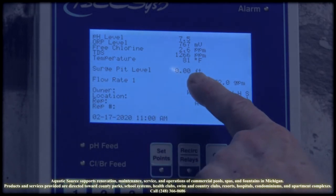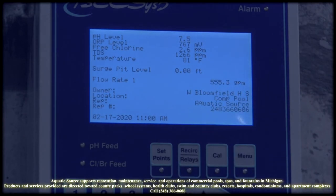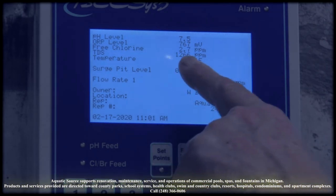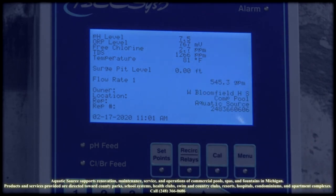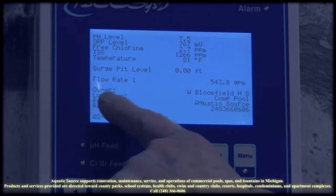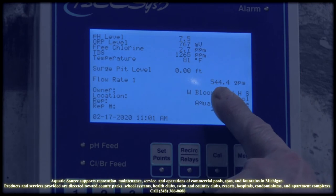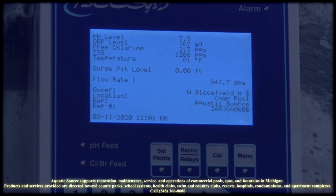We also have, on this one, a surge pit level. If the surge tank for some reason starts to overflow from a power or a pump shutdown, it will actually send an alarm through the ethernet that's in here to the operator's phone, either a text or an email. We also have the flow rate coming on. You can set that as an alarm also. If the flow rate drops too low, it'll send the operator either a text or an email. It'll also show up on their phone as an alarm.